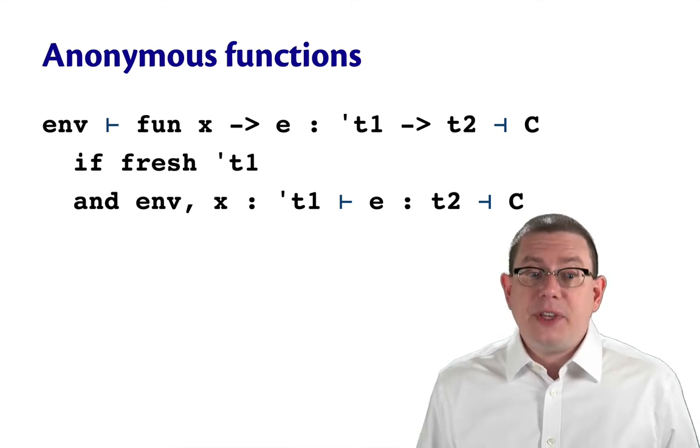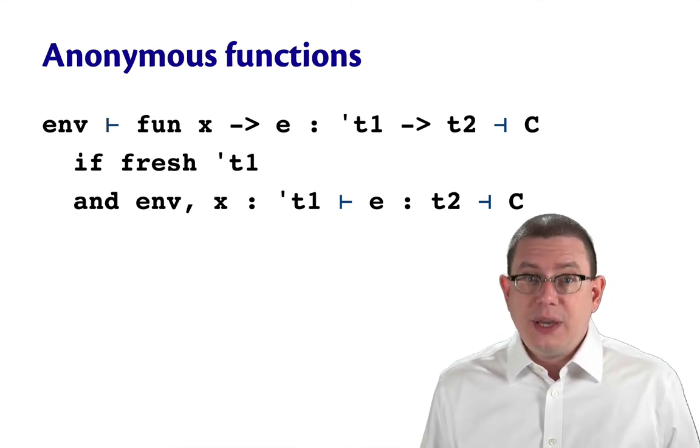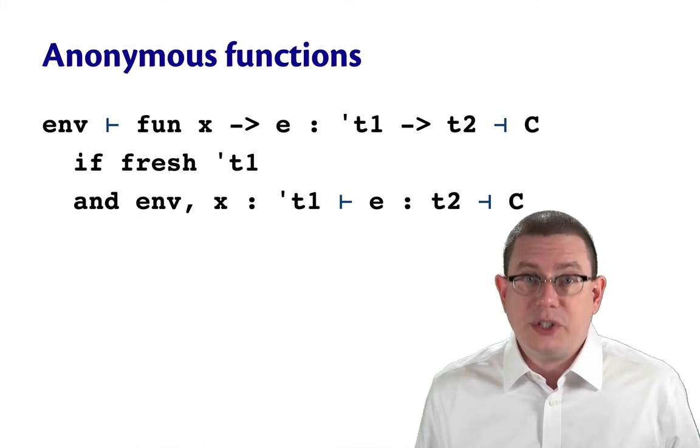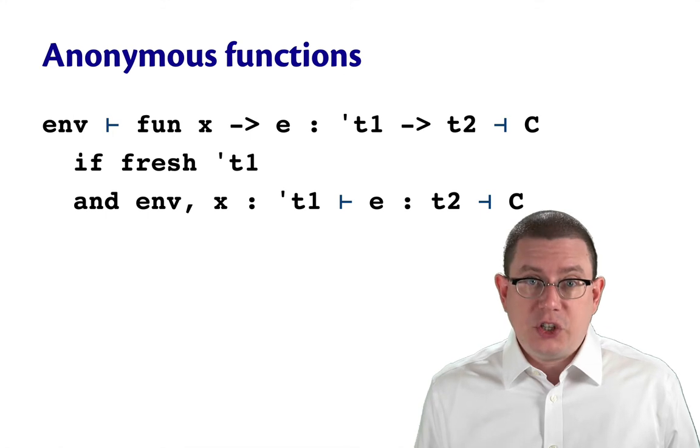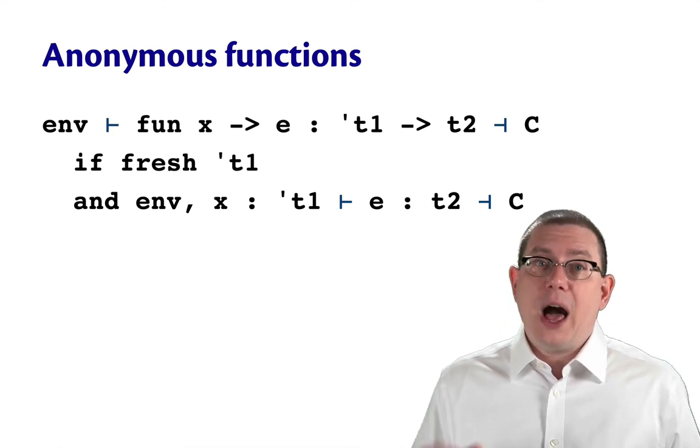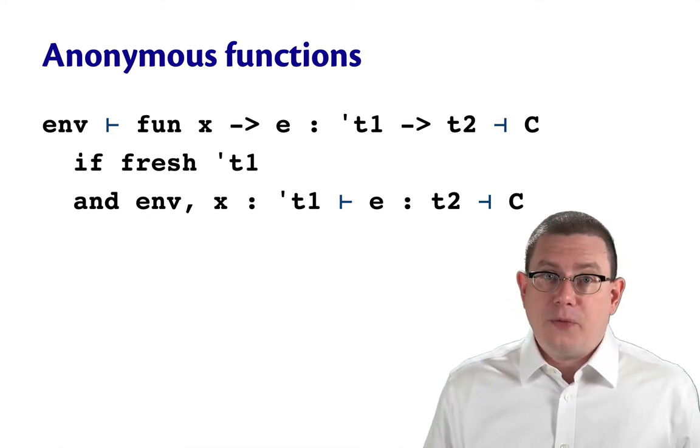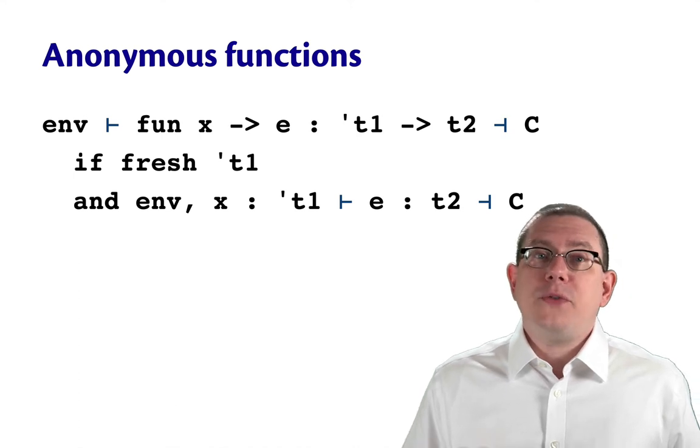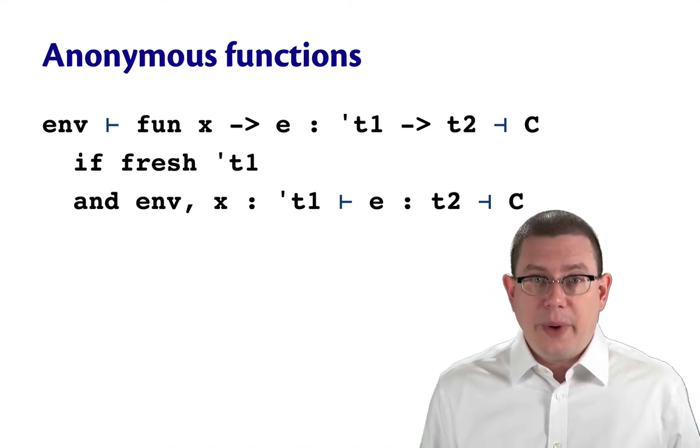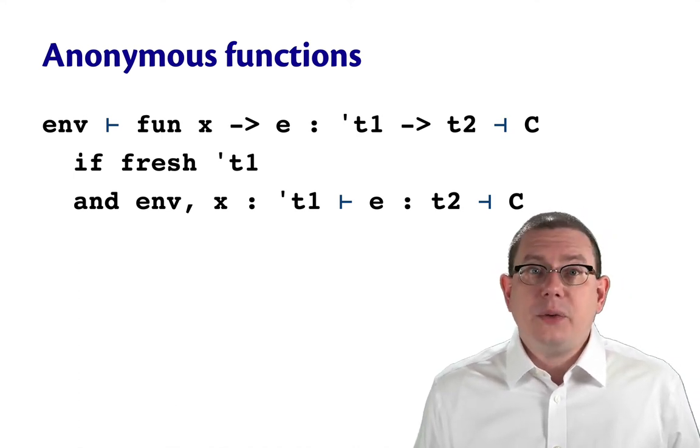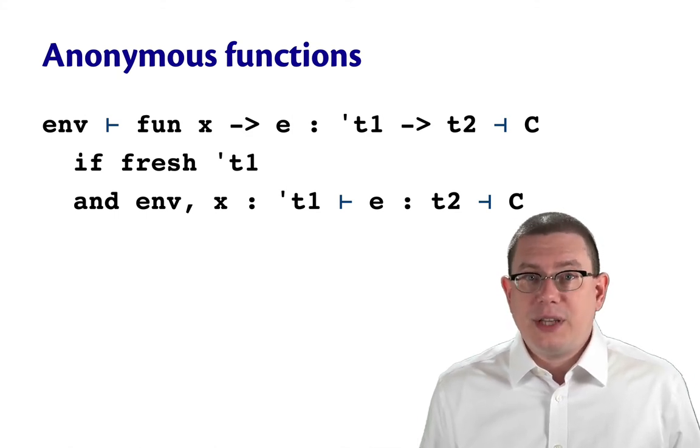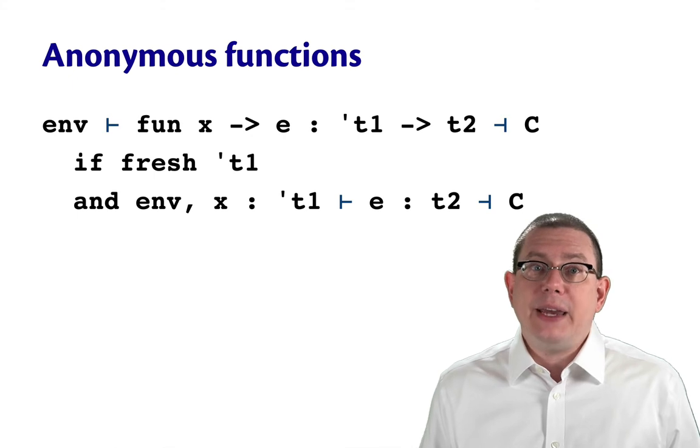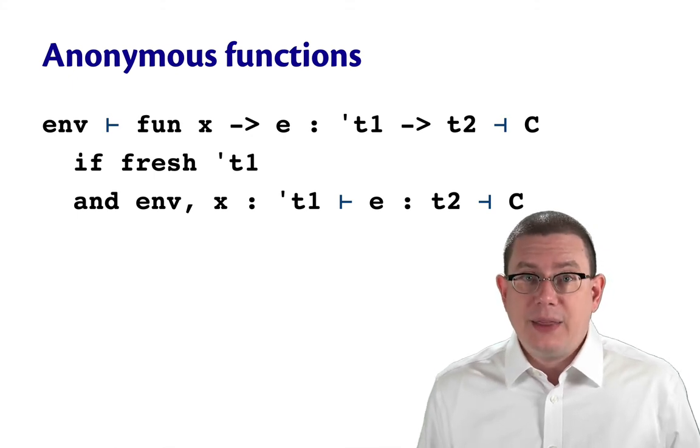So the type of the entire anonymous function, then, is the type of its argument, which is tau1, arrow the type of its body, which is t2. So the algorithm picked a type variable for the argument. The algorithm inferred a type for the body. And finally, the set of constraints returned for type inference of the anonymous function is just the set of constraints that were produced by inferring the type of its body, that set c.